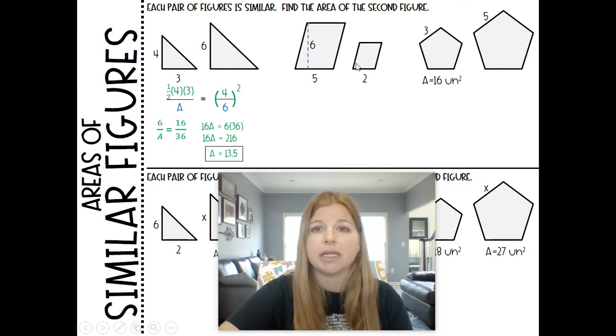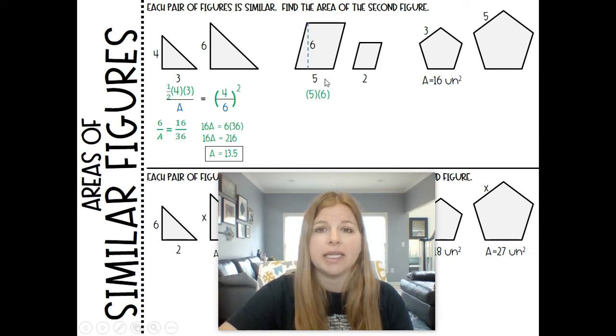Next one, parallelograms. I can calculate the area of my first parallelogram, just 5 times 6 base times height. I don't know the area of my second parallelogram. But I do see the scale factor. It's from 5 to 2. So 5 over 2 and then I need to square that fraction.